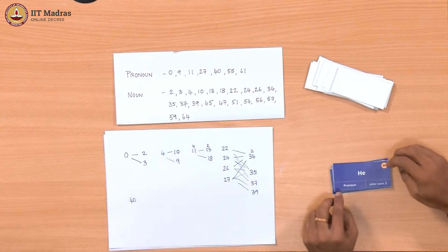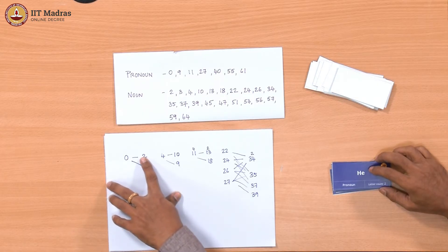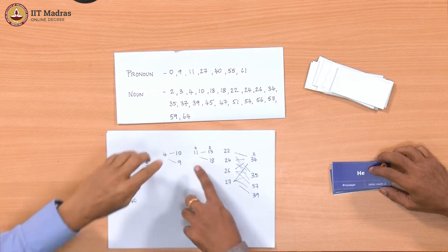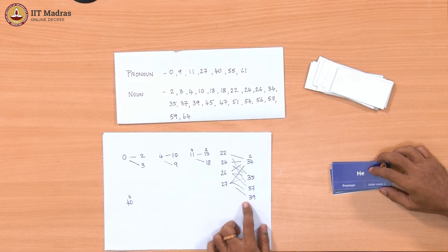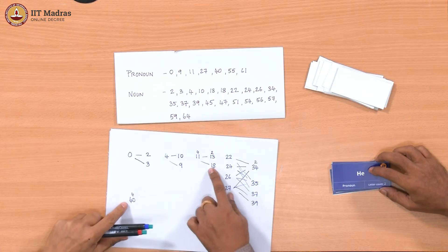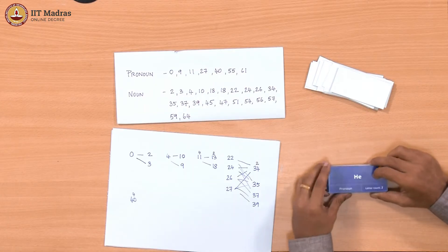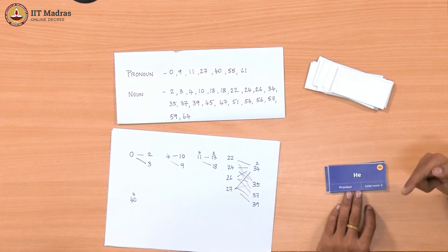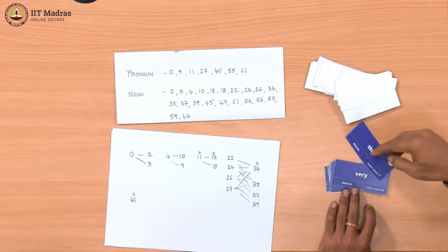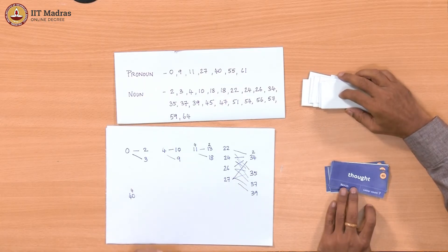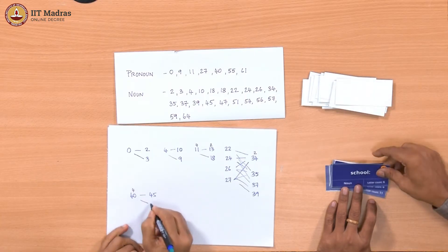Now we have node 40, which is again Swaminathan — 40 is 'he' which we resolve to Swaminathan, so that is again node 4. We can see something: this is introducing Monday, this is introducing Swaminathan, and then Swaminathan appears again here and connects to Monday. Now node 40 with the verb 'shattered' — so this is the connecting verb — node 4 is connected to node 45, which is 'thought of school.' So 4 is also connected to school now. Swaminathan is connected to school.